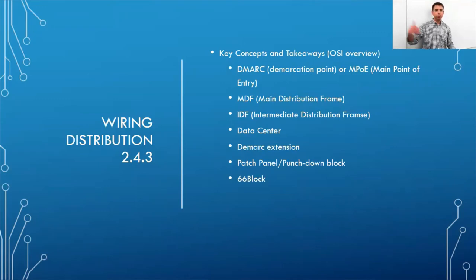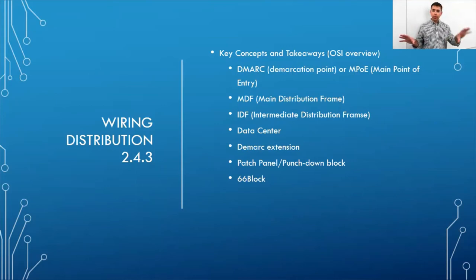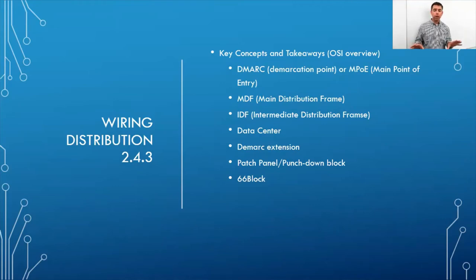In wiring distribution, the demarc (demarcation point) or MPOE (main point of entry) is where the ISP brings the connection into the building and provides their equipment such as a modem. The demarc is often separate from the MDF (main distribution frame), though the MDF and data center are sometimes the same room.